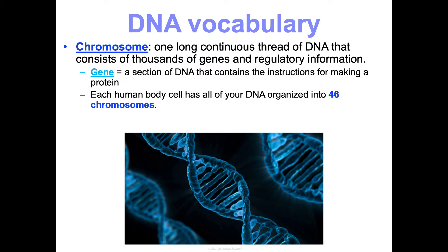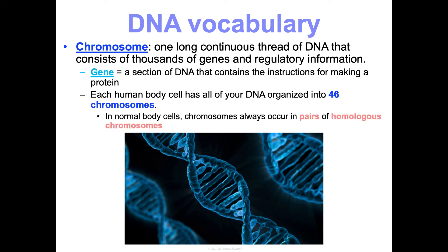This number is different in different organisms — fruit flies only have six chromosomes. In humans it's 46, so your brain cells, skin cells, and blood cells all have 46 chromosomes. Additionally, in those normal body cells, your chromosomes occur in pairs, which we call homologous chromosomes. The prefix 'homo' means same — so similar chromosomes.